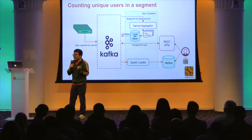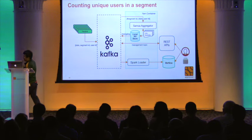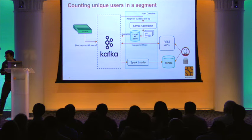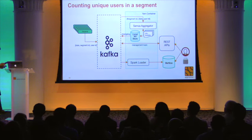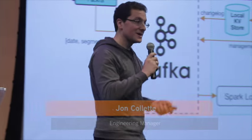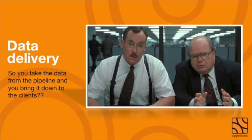Now I've covered data ingestion and data processing. Next I'll introduce John Collette, our engineering manager, to talk about how data is delivered to our clients. So I'm John, I run our data delivery team. What we do is take data that has been processed by the pipeline and get it to our customers. I'll tell you about what data we have, give examples of how clients use it, talk about the architecture, and share some lessons we've learned.